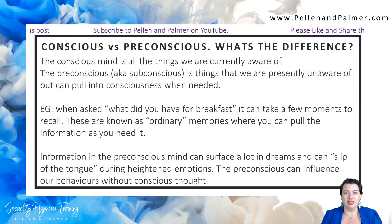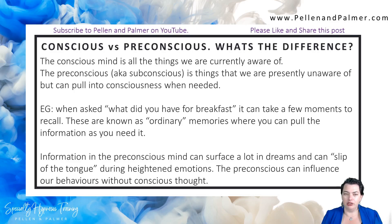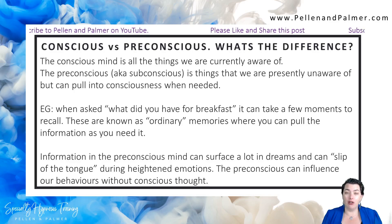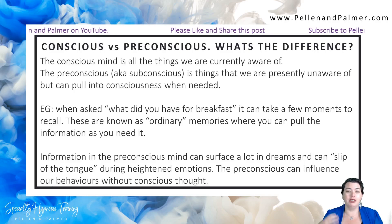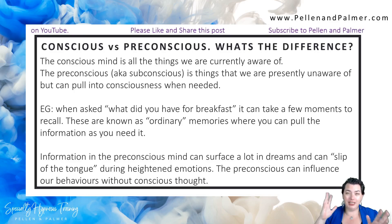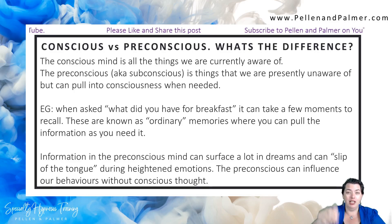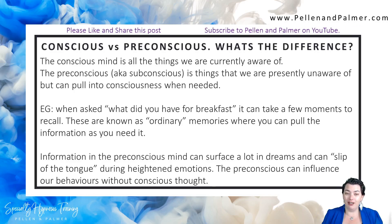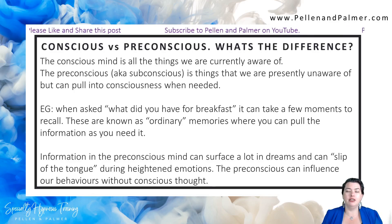So what's the difference between conscious versus pre-conscious? The conscious mind is all the things that we are currently aware of. The pre-conscious, also known as the subconscious, is things that we are presently unaware of but can pull into the conscious when we need. So we have that filing system — if we need any information out of it, we can pull out that file. For example, when asked 'what did you have for breakfast?' it can take a few moments to recall. These are known as ordinary memories.